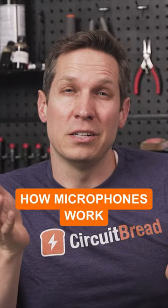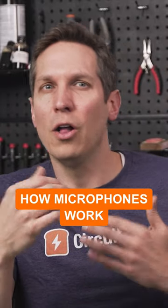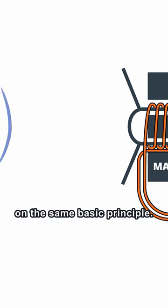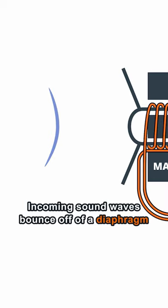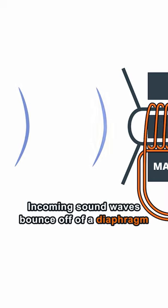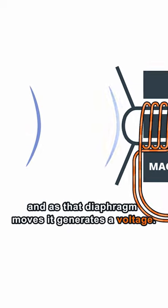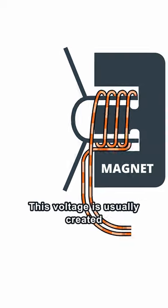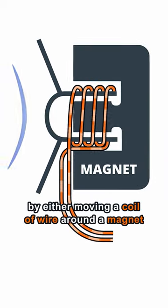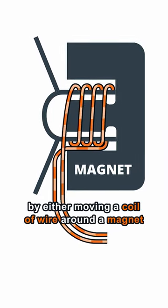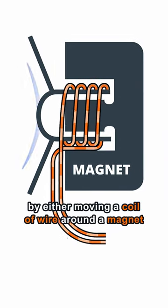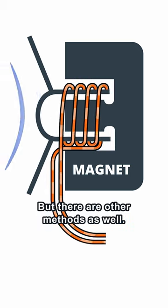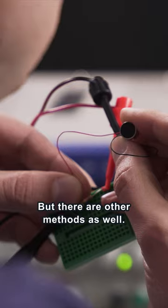While there are different microphone technologies out there, they all operate on the same basic principle. Incoming sound waves bounce off of a diaphragm, and as that diaphragm moves, it generates a voltage. This voltage is usually created by either moving a coil of wire around a magnet or bending a piezoelectric material, but there are other methods as well.